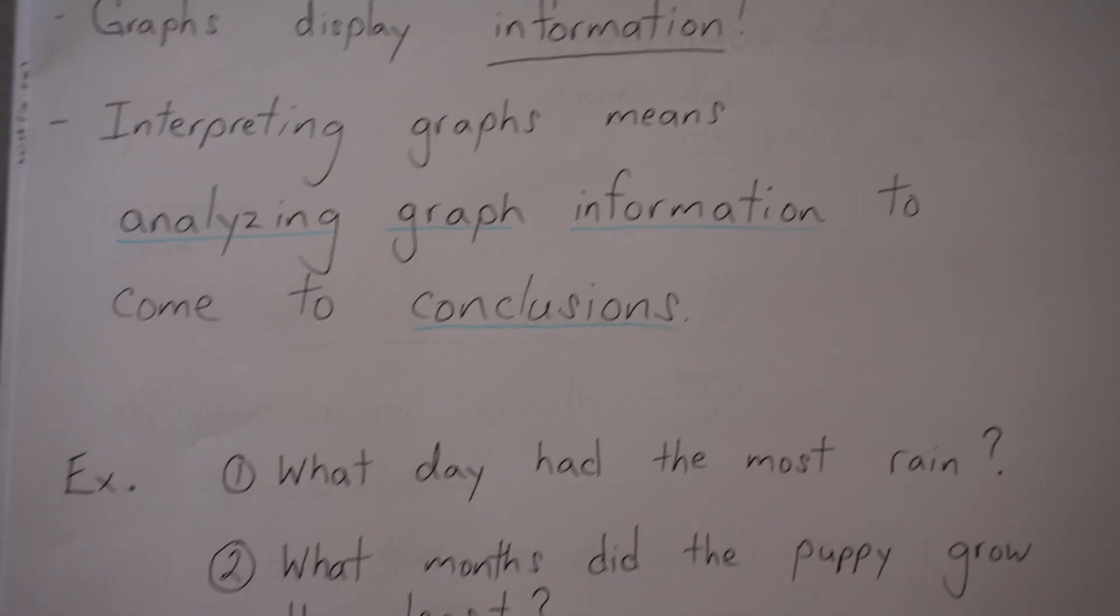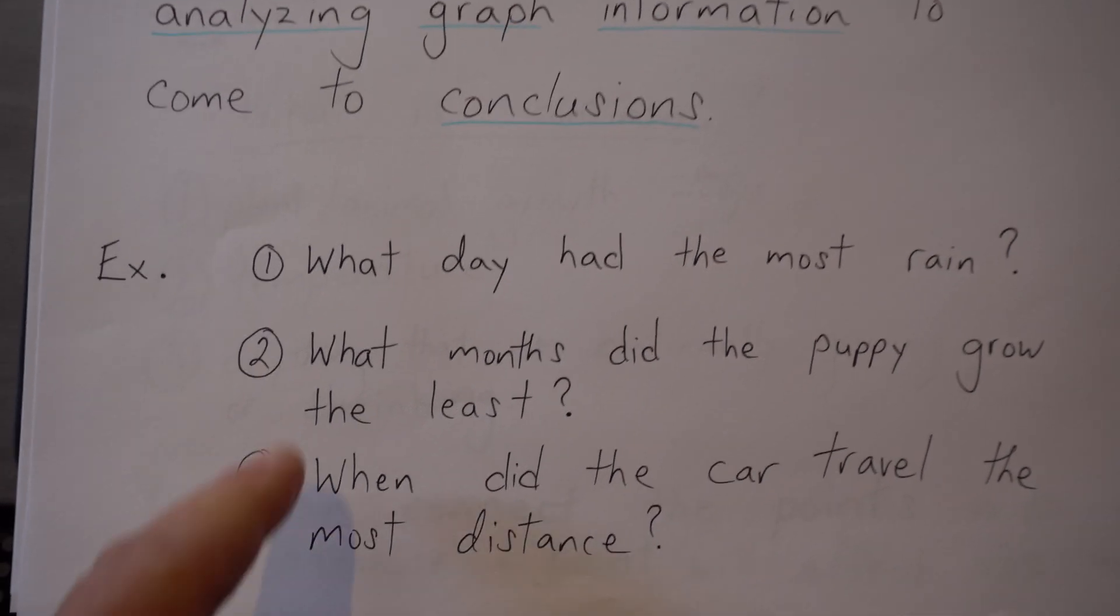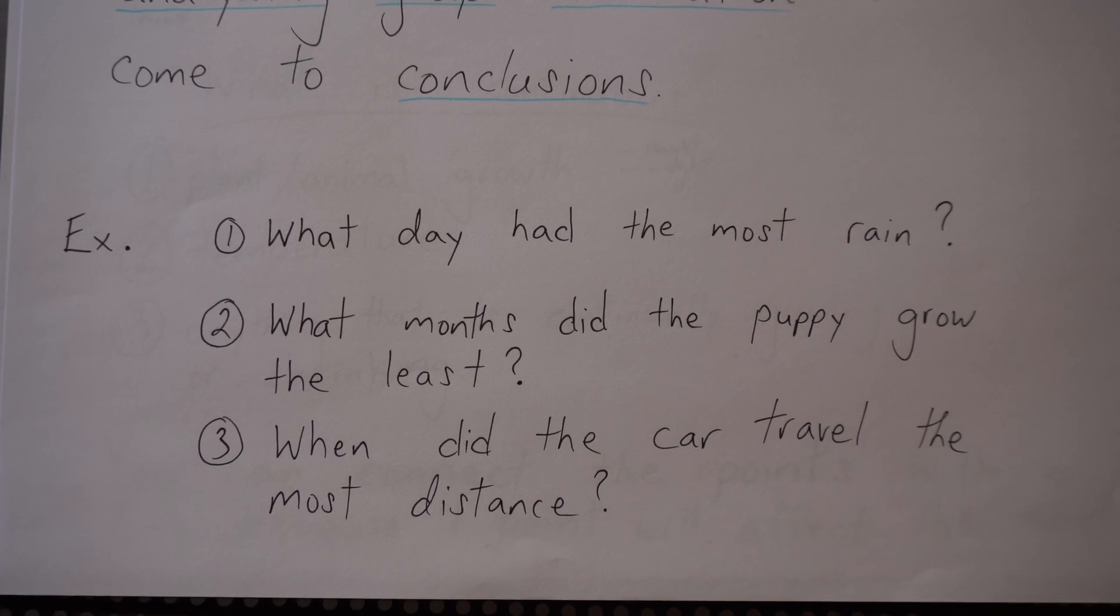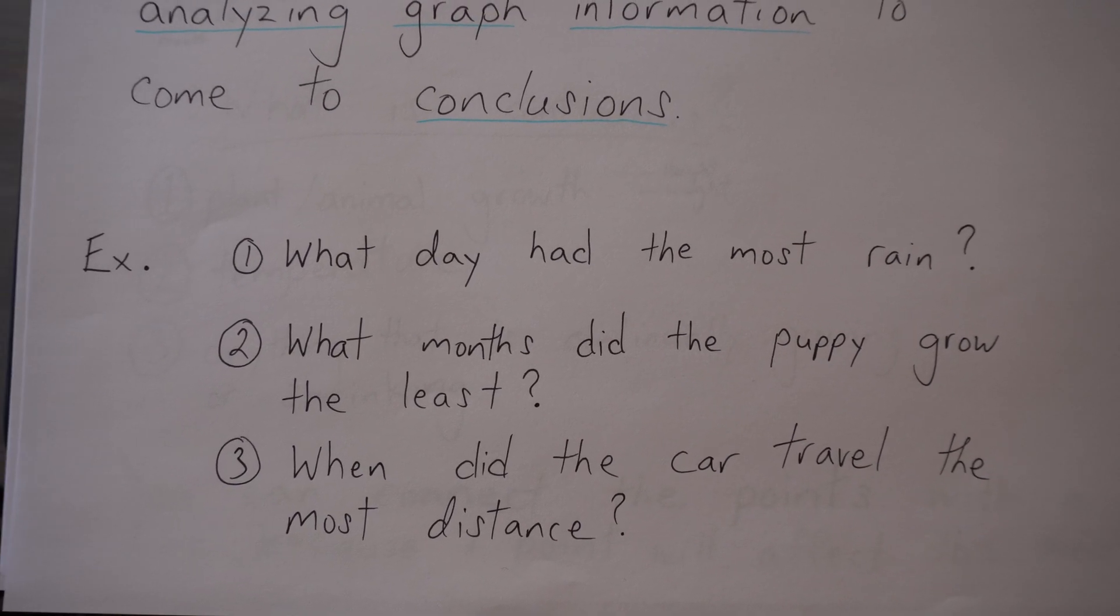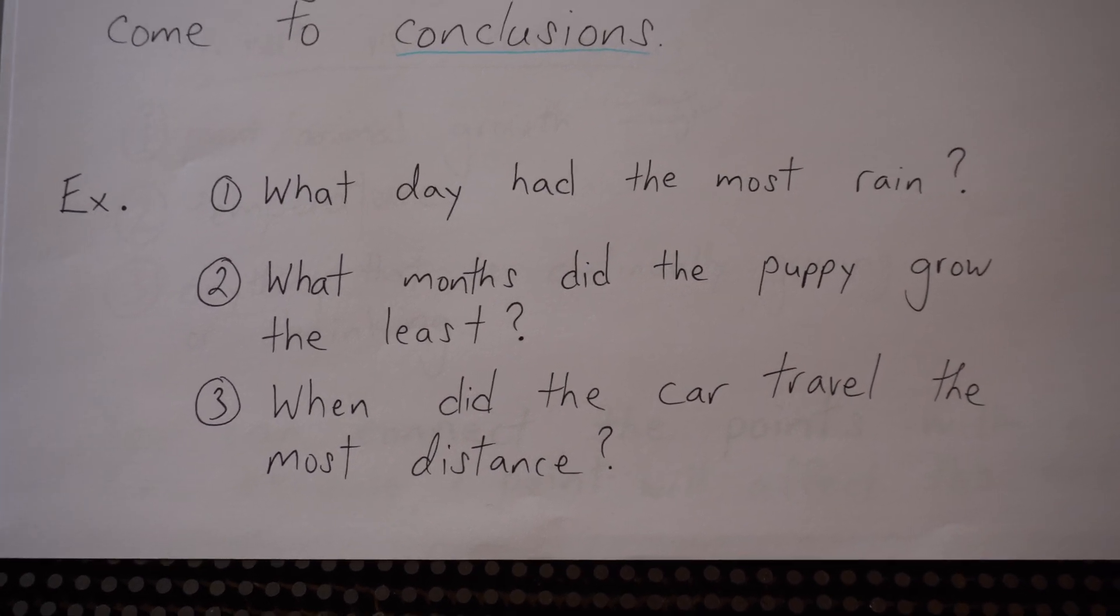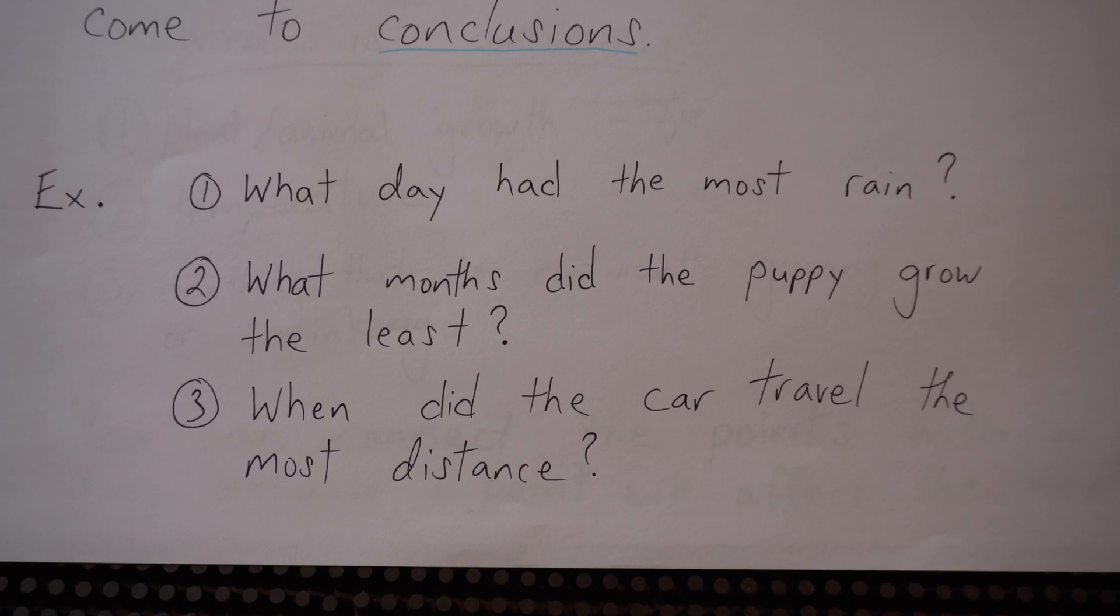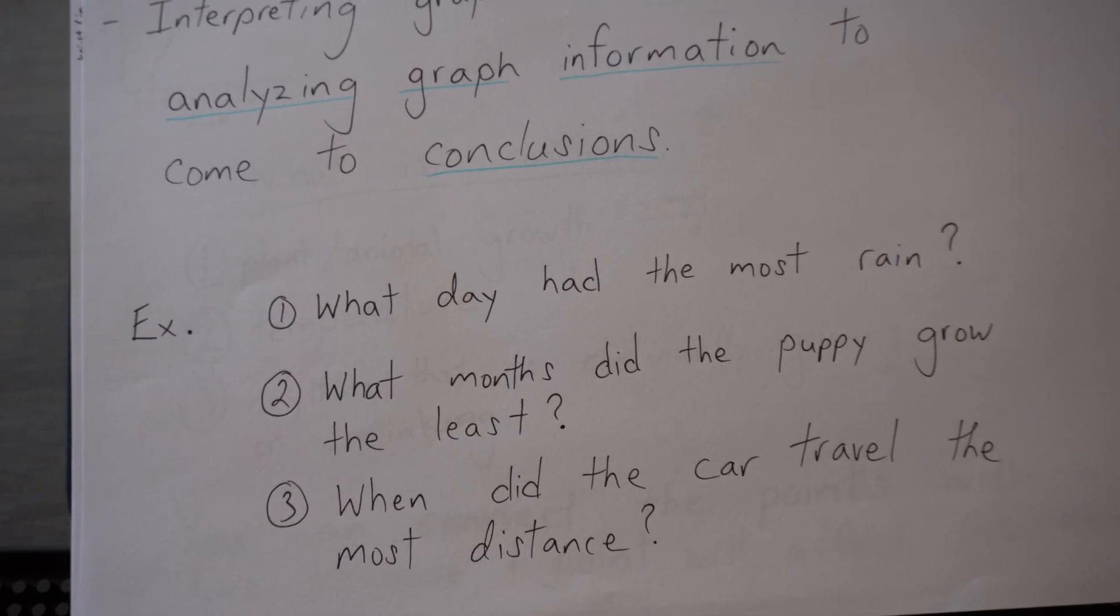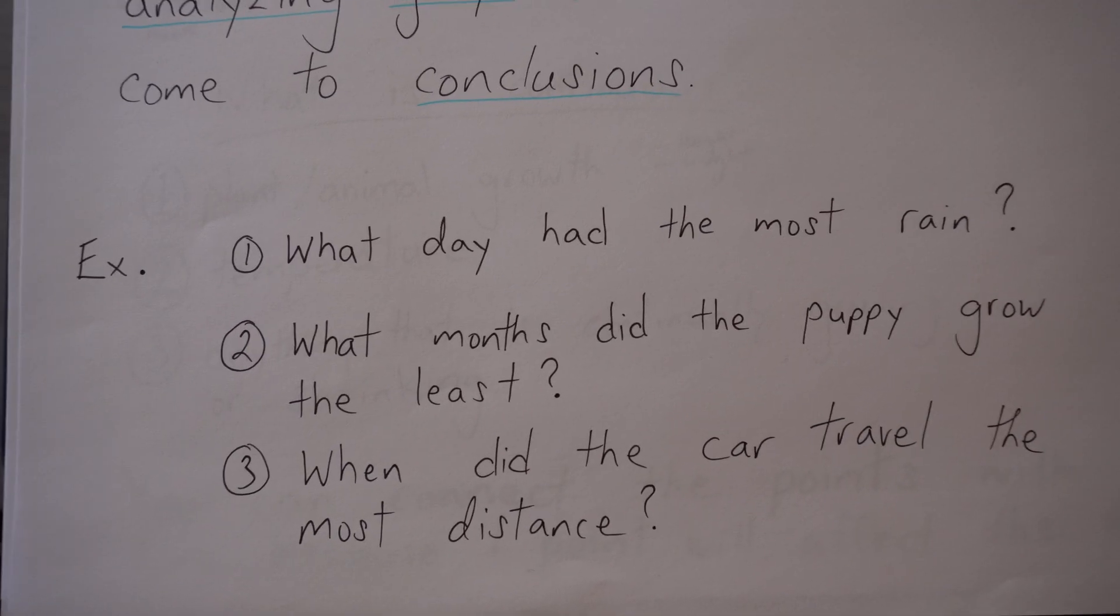For example, from a graph, you could find something like, what day had the most rain? Or what months did the puppy grow the least? Because that's always important. Lastly, you could find when did the car travel the most distance? Maybe someone really had the lead foot. That graph will show you that.